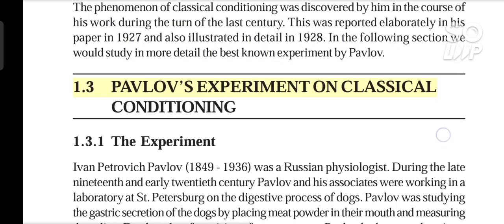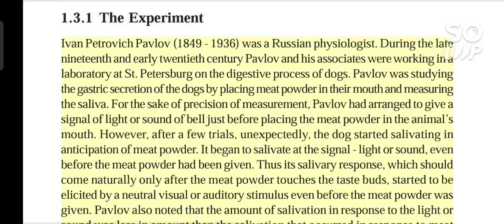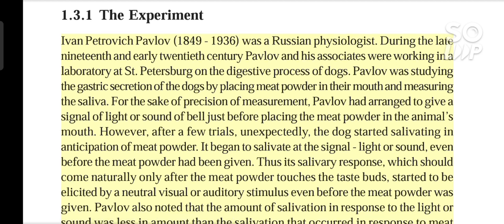Ivan Petrovich Pavlov (1849–1936) was a Russian physiologist. During the late 19th and early 20th century, Pavlov and his associates were working in a laboratory at St. Petersburg on the digestive process of dogs. Pavlov was studying the gastric secretion of the dogs by placing meat powder in their mouth and measuring the saliva. For the sake of precision of measurement, Pavlov had arranged to give a signal of light or sound of a bell just before placing the meat powder in the animal's mouth.